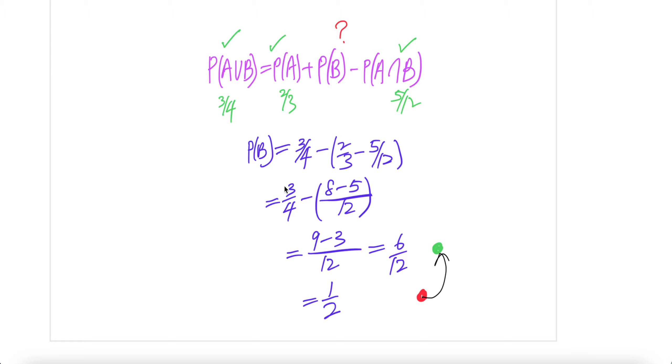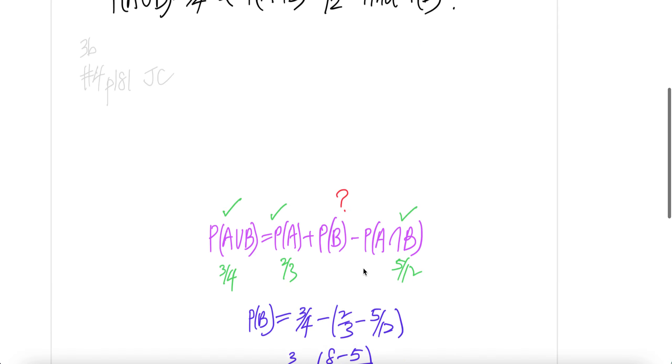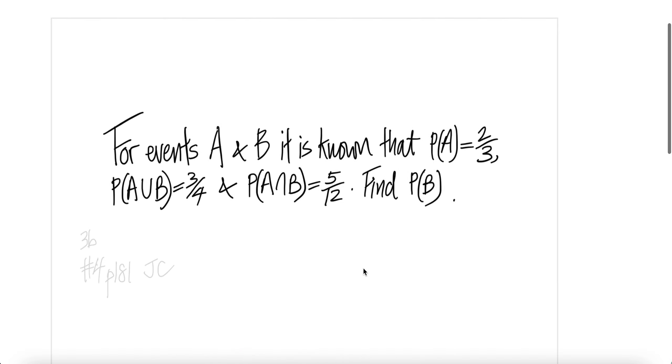And then here will be nine minus three over 12, which is equal to six over 12. We get a half. Therefore, the probability of B is half. Done.